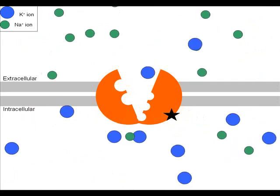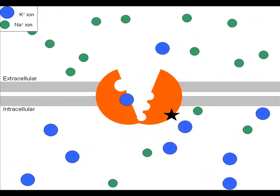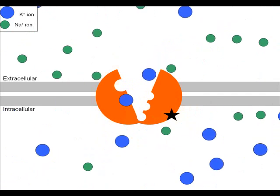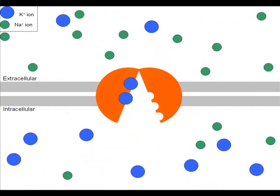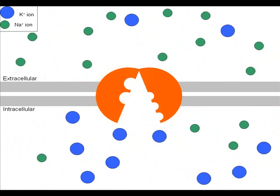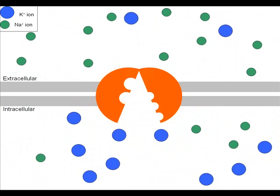The pump binds two potassium ions outside of the cell, which causes release of the phosphate and induces a conformational change, which then releases potassium and allows the cycle to start again.